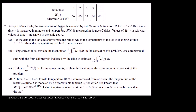As a pot of tea cools, the temperature of the tea is modeled by a differentiable function h, for 0 ≤ t ≤ 10, where time t is measured in minutes and temperature h(t) is measured in degrees Celsius. Values of h(t) at selected values of time t are shown in the table. Use the data in the table to approximate the rate at which the temperature of the tea is changing at time t equals 3.5. Show the computations that lead to your answer.